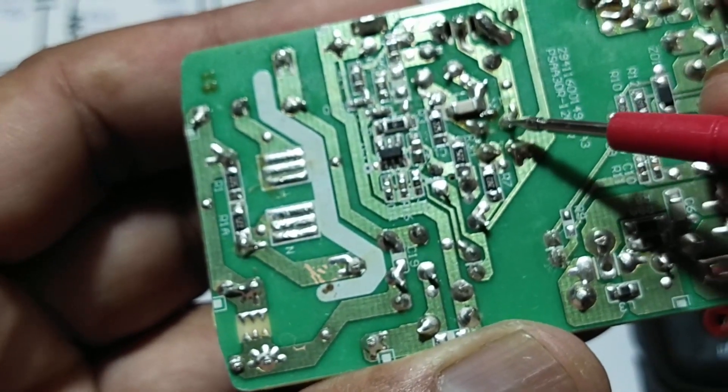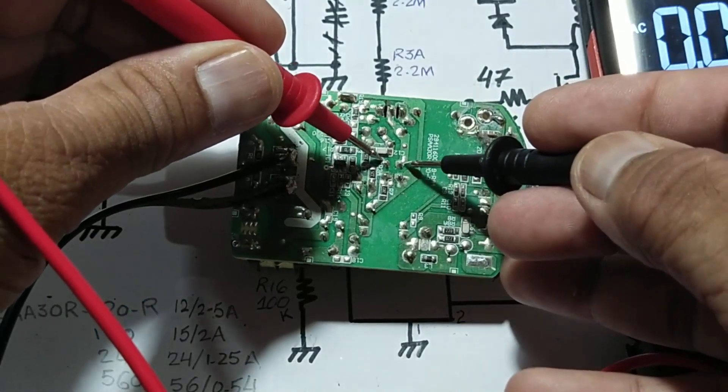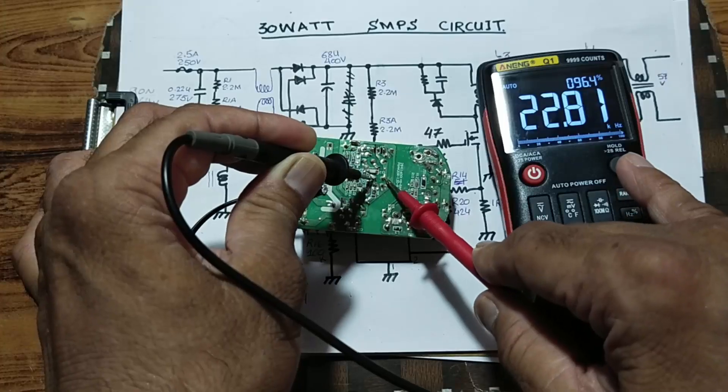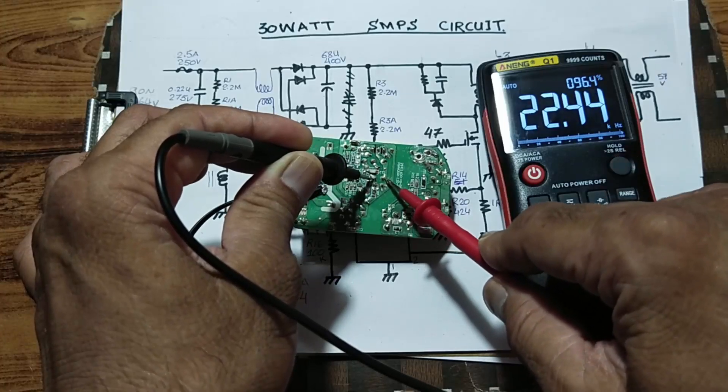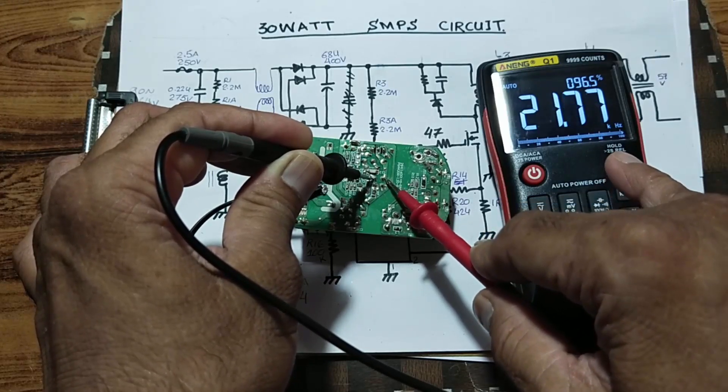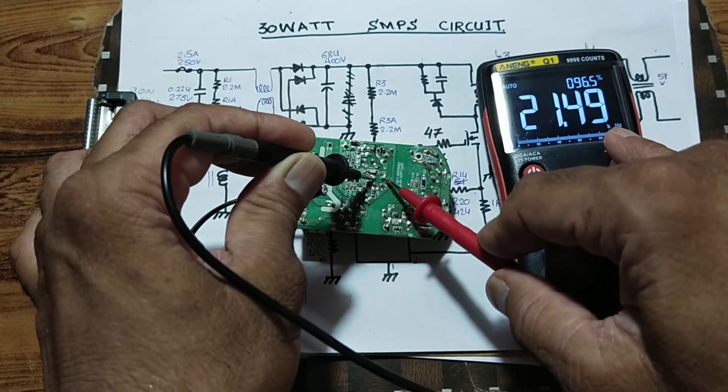So we have to check between this point and this point. Friends, if you have no good practical experience in power electronics, never try to repair anything in frequency test mode. Connect probes to the transformer primary side. It has 21 kilohertz and it is showing 96 percent duty cycle.